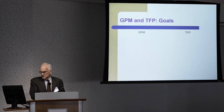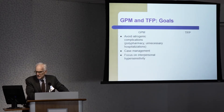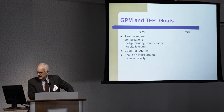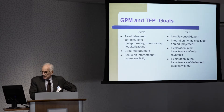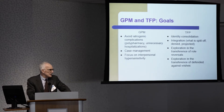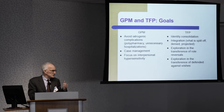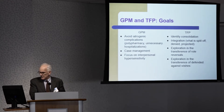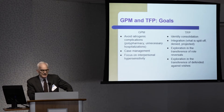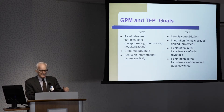The goals of the treatment are somewhat different. The main goals of GPM could be summed up as avoiding iatrogenic complications, avoiding polypharmacy, unnecessary hospitalizations, useful and practical case management, and a focus on interpersonal hypersensitivity. TFP has different goals — primarily identity consolidation, integration of what is split off, denied, or projected, and exploration in the transference of role reversals. That gets at the point about integration of aggression not fully in the patient's awareness that might emerge in the transference, and exploration of defended-against wishes — what we call in TFP a dyad defending against another dyad.